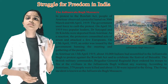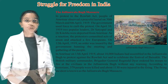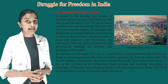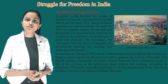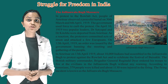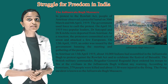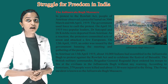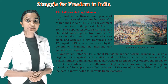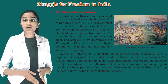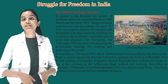On 13th April 1919, about 10,000 Indians had assembled in the Jallianwala Bagh to protest against the Rowlatt Act and to celebrate the festival of Baisakhi. The British military commander, Brigadier General Reginald Dyer, ordered his troops to fire at the civilians without any warning. According to historians, 379 people were killed and about 1,130 were injured in the firing. This tragic incident is known as the Jallianwala Bagh Massacre.